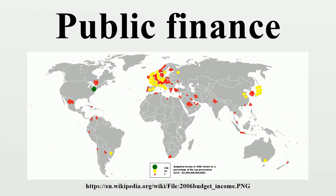There are various types of taxes, broadly divided into two heads: direct and indirect tax. These include stamp duty levied on documents, excise tax, sales tax, and value added tax — a type of sales tax. There are also taxes on specific services.